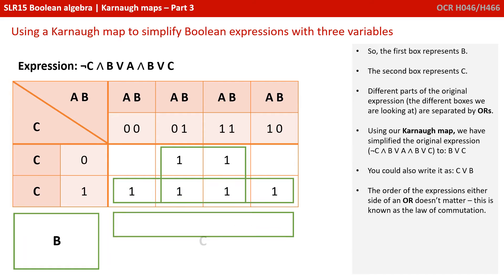So, the first box represents B. The second box represents C. And different parts of the original expression, the different boxes, are separated by ORs. So, using our Karnaugh map, we've simplified the original expression, NOT C AND B, or A AND B or C, down to B or C. You could also write this as C or B. The order of the expressions either side of an OR doesn't matter. And this is known as the law of commutation, which we'll look at in a later video.